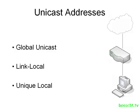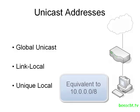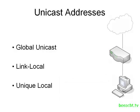Unique local addresses are the same as IP version 4 private addresses — they are not routable over the internet and are purely meant to be used on a private network segment. These are the three unicast address types, and you should be able to identify each one at the very least by the prefix it comes from.